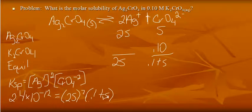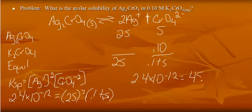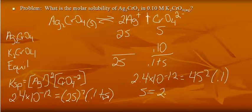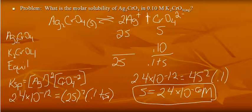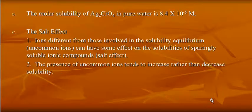Now we can assume S is negligible compared to 0.1, so we can rewrite this. 2.4 times 10 to the negative 12th is equal to 4S squared times 0.1. S is going to be very small compared to 0.1. It's negligible. And we can solve for S this way, and the solubility when we add the common ion comes out to 2.4 times 10 to the negative 6th molar. So this is the solubility with the common ion chromate. The solubility in pure water was 8.4 times 10 to the negative 5th. So the solubility when we add a common ion decreases according to Le Chatelier's principle.